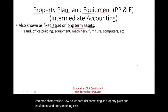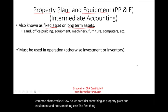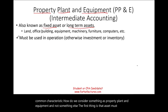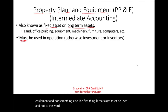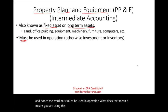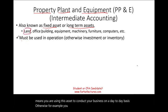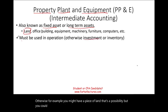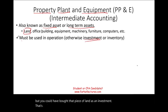The first characteristic is that the asset must be used in operations — notice the word must. It means you are using this asset to conduct your business on a day-to-day basis. Otherwise, for example, you might have a piece of land, but if you bought it as an investment, that's an investment — it's no longer property, plant, and equipment because it's not used in operations.